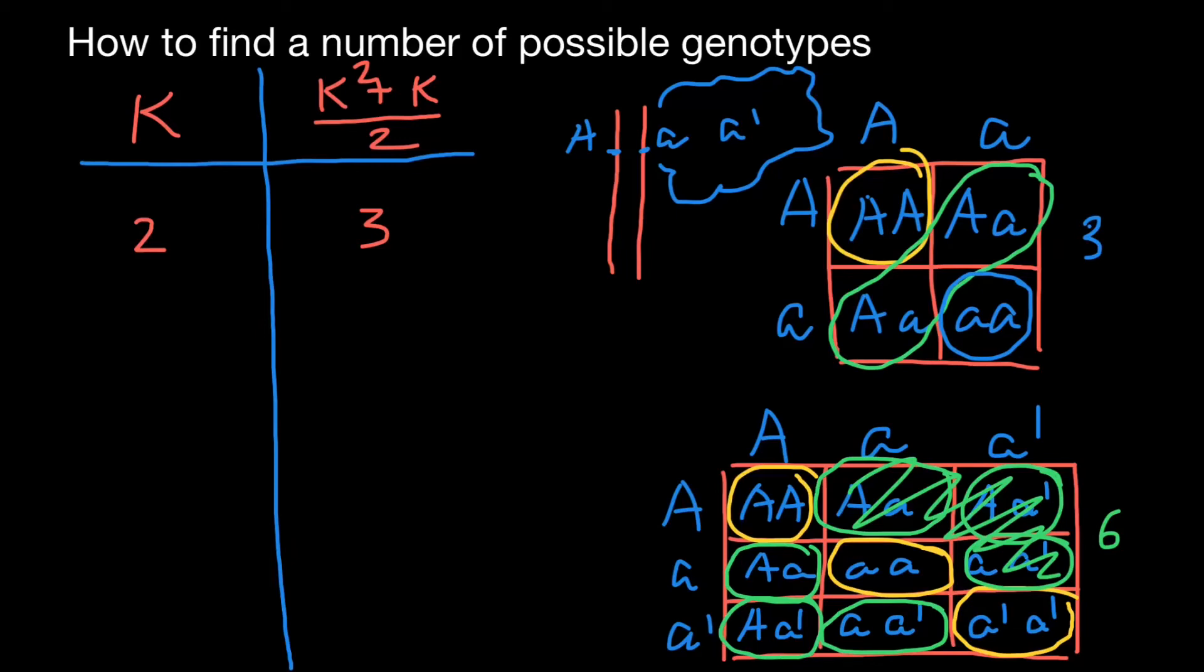Let's check what if we would have three alleles. In our gene pool, three squared would be nine plus three would be twelve divided by two is going to be six. With three alleles, we would have six genotypes. And this is what we already got here.